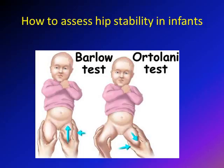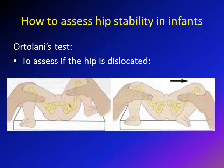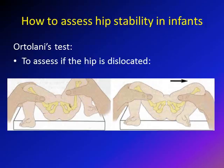There are two maneuvers to assess hip stability in infants, and these should be done for all infants in the neonatal period: the Barlow test and the Ortolani test. The Ortolani test assesses if the hip is dislocated. A memory aid: Ortolani starts with O, and out starts with O — so if the hip is out, you do the Ortolani test to see if you can bring it in.